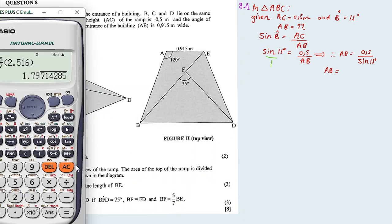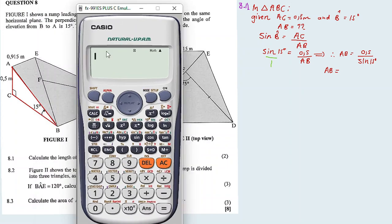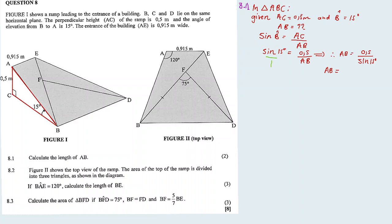Let us calculate. It's 0.5 divided by sine 15 degrees, which equals, in two decimal places, 1.93 meters.